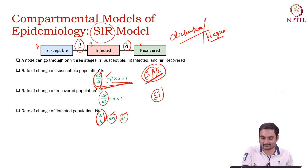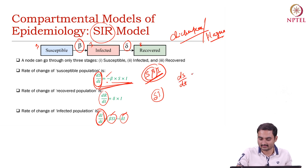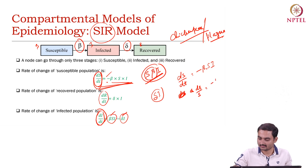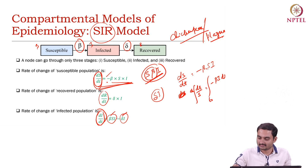So now let us look at this. dS/dt equals minus beta·S·I. We can say that dS/S equals minus beta·I·dt, and we can integrate it from t₀ to t, from S(t₀) to S(t).